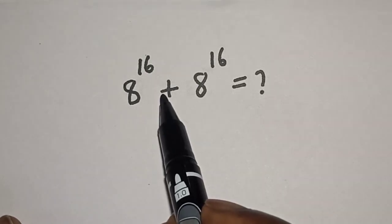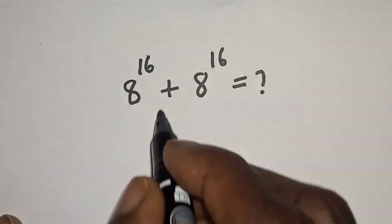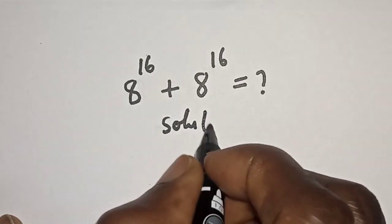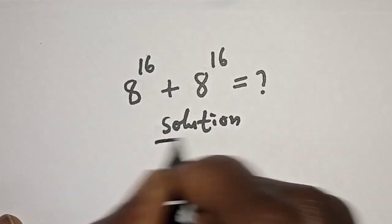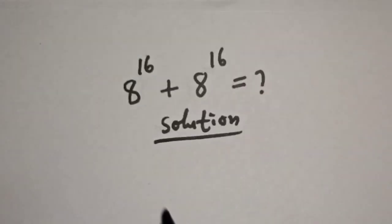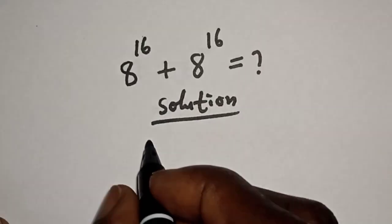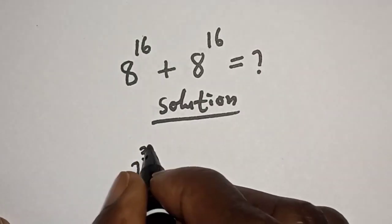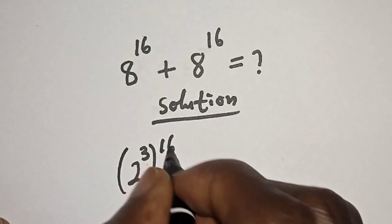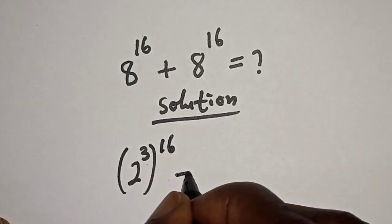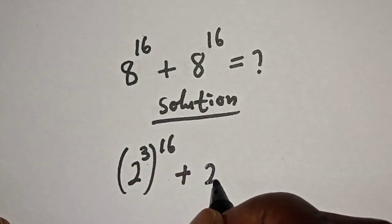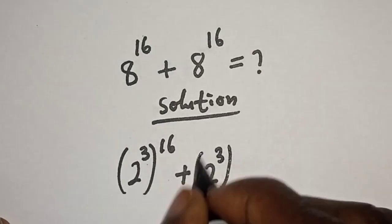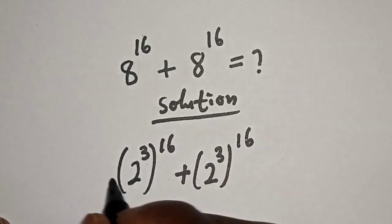Solution: 8 raised to power 16 can be rewritten as 2 raised to power 3, to the power of 16, plus the same thing — 2 raised to power 3 to the power of 16.